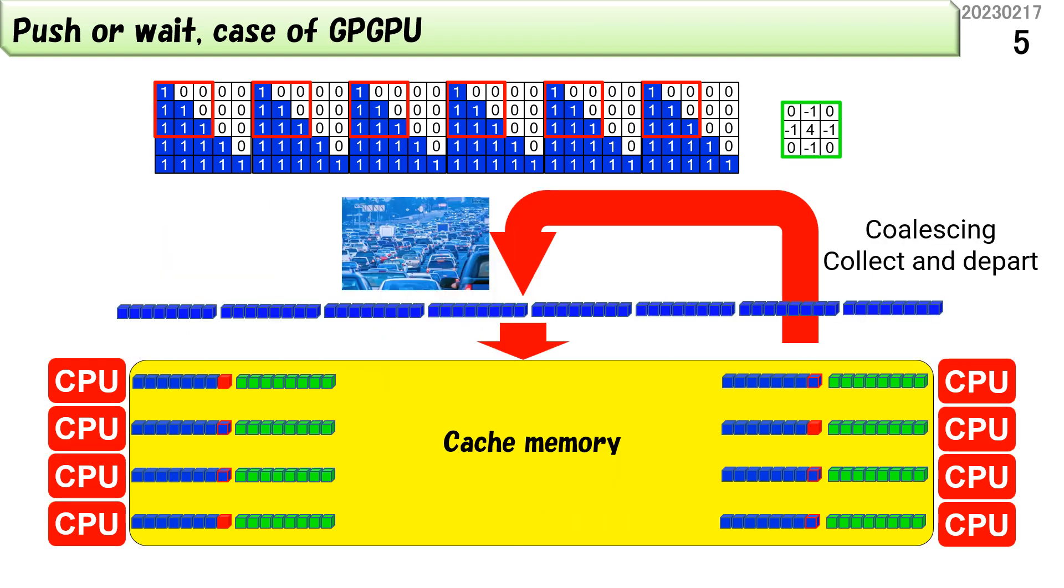GPU also has many CPUs, but the cars are aligned and coalesced as much as possible before they depart. By merging the departure and arrival, we can reduce traffic congestion.